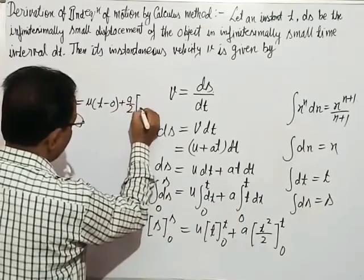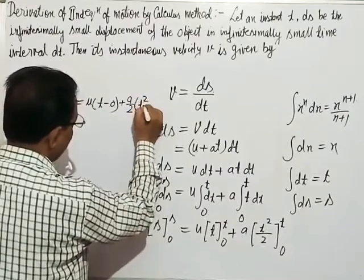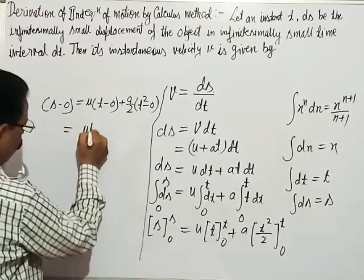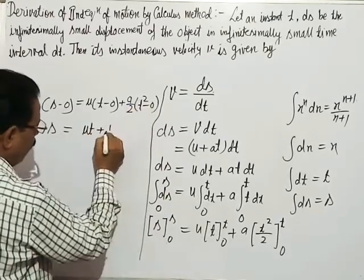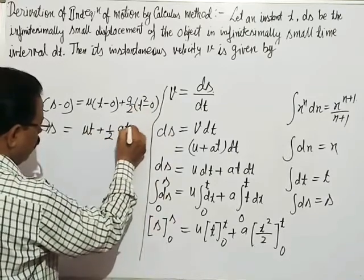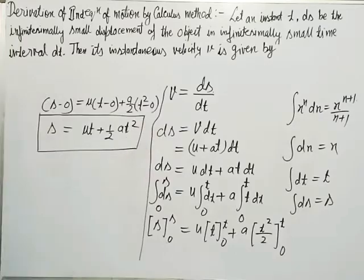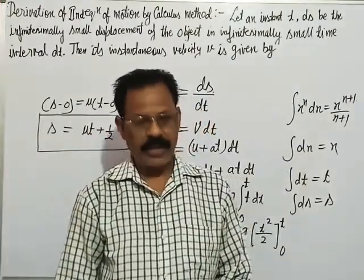Putting it all together, we get s = ut + (1/2)at². This is the second equation of motion. Thank you.